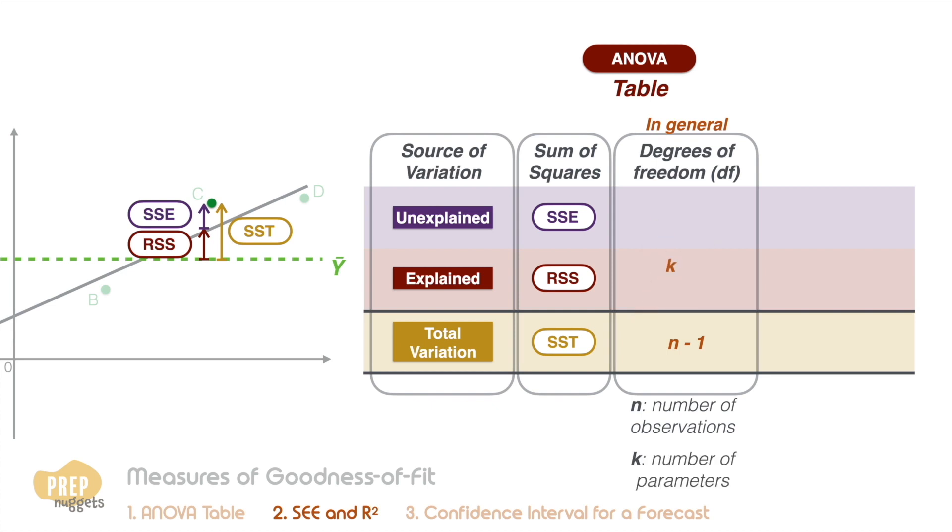In general, the degrees of freedom for the regression is the number of parameters, which in this case is just 1, as there's only one independent variable in a simple linear regression. The degrees of freedom for the error is generally n minus the number of parameters, minus 1, which for a simple linear regression is n minus 2.